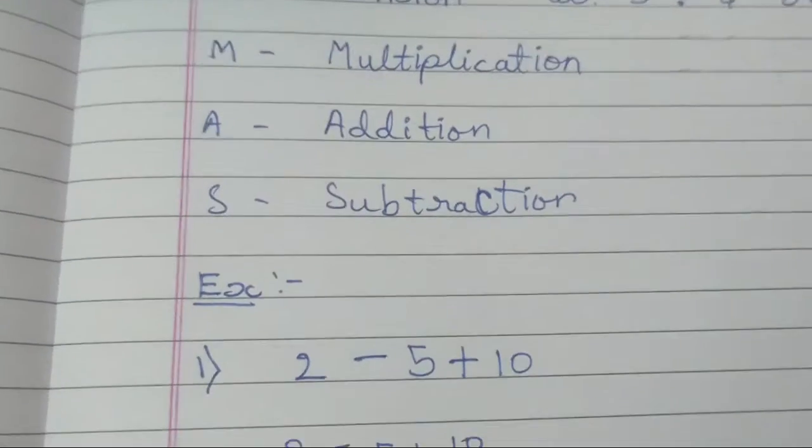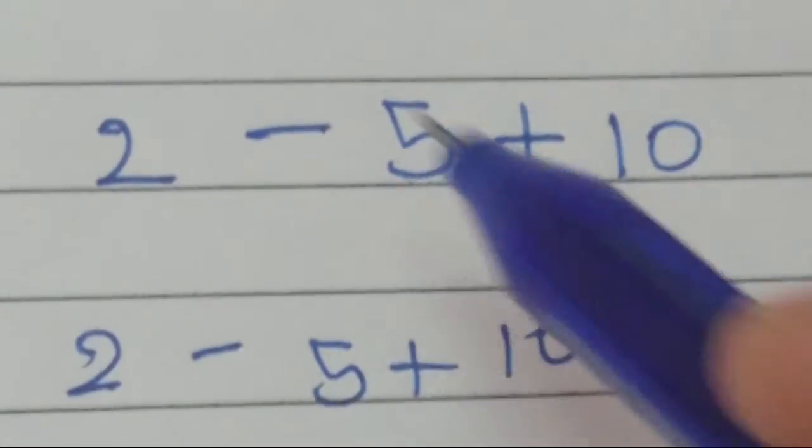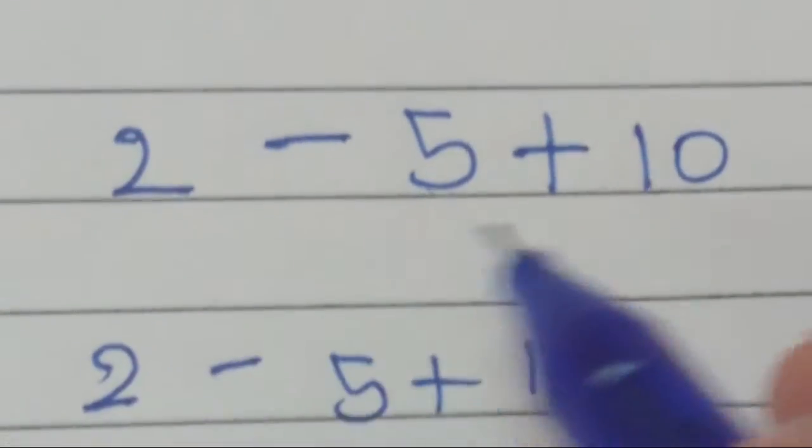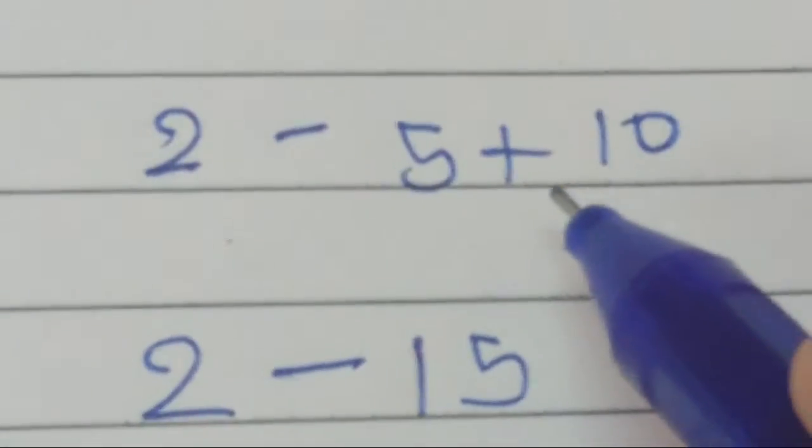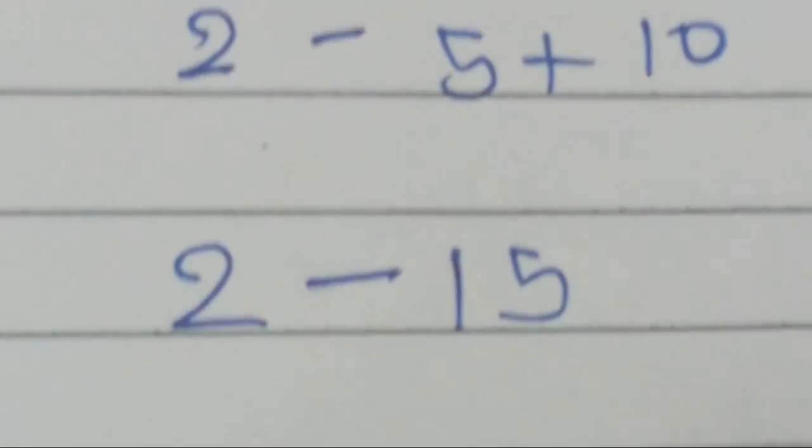So here also we should do first addition, then subtraction. So 2 minus 5 plus 10. All you should do here is first you should do 5 plus 10, because addition is first.